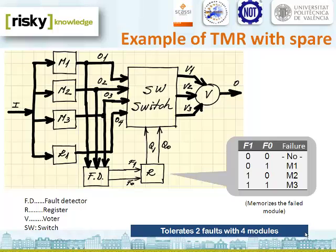As an example of a hybrid hardware redundancy technique, we are going to study the behavior of a TMR system that includes also a spare. The idea is to provide a basic core of N modules arranged in a form of voting configuration, and spares are provided to replace failed units in the NMR core. The benefit of this system with a spare is that a voting configuration can be restored after a fault has occurred.